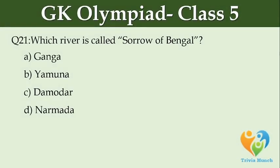Which river is called the Sorrow of Bengal? Option A: Ganga. Option B: Yamuna. Option C: Damodar. Option D: Narmada.